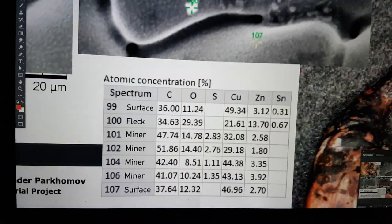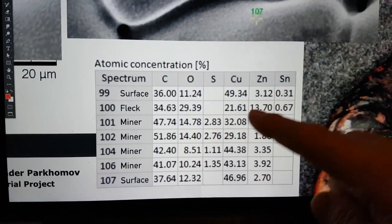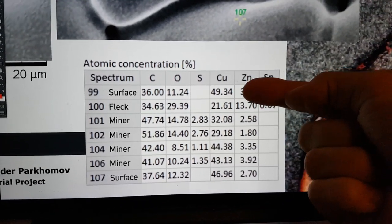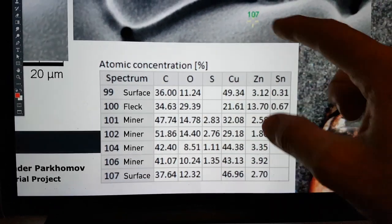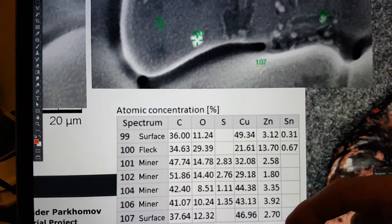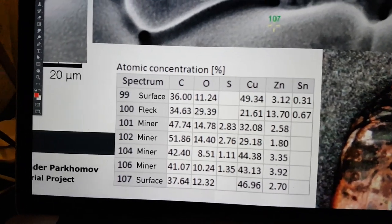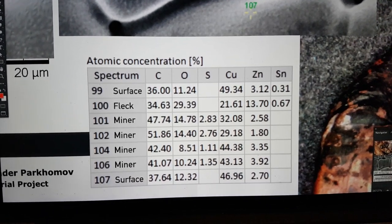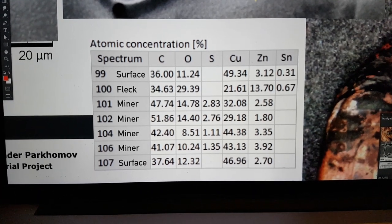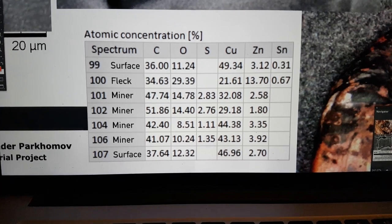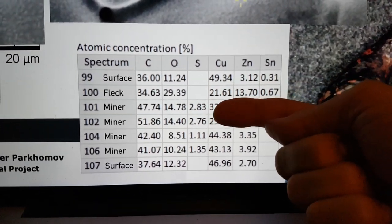So I've named them here. The surface and the surface, these are 99 and 107. And you can see that they have almost exactly the same constituents of these cobblestones. The fleck is an outlier. It has some tin, but it's much lower on the copper, like half the copper by atomic percent and very, very much more zinc. But look at what I'm calling the miners, and each of them contain sulfur.